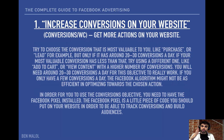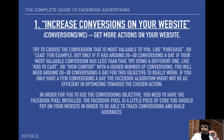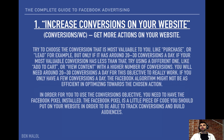You always want to choose the conversion most valuable to you, but only if it has around 20 to 30 conversions a day. If your most valuable conversion has less than that, try using a different one like add to cart or view content. If you have 10 purchases a day, you might have 30 add to carts, which is enough data. And if you have 30 add to carts, you probably have about 100 view content events. View content fires when a person just lands on your website. Always optimize for the conversion with the most data — at least 20 to 30 per day.